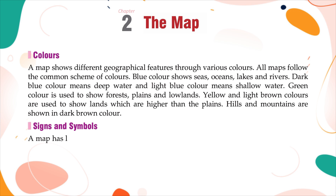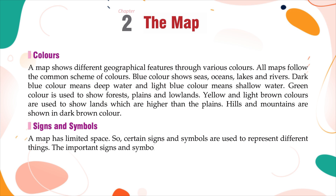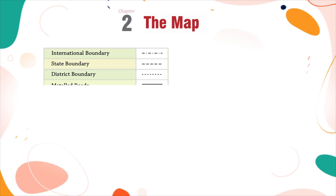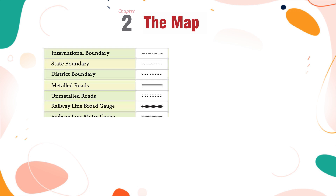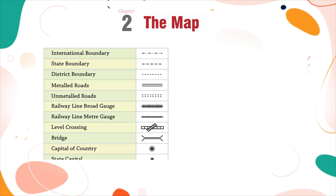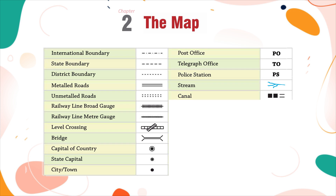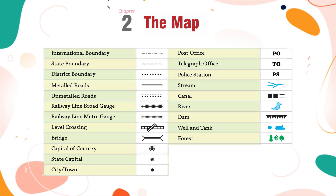Signs and Symbols. A map has limited space, so certain signs and symbols are used to represent different things. The important signs and symbols include: international boundary, state boundary, district boundary, metalled roads, unmetalled roads, railway line broad gauge, railway line meter gauge, level crossing, bridge, capital of country, state capital, city or town, post office, telegraph office, police station, stream, canal, river, dam, well and tank, forest, temple, church, and mosque.